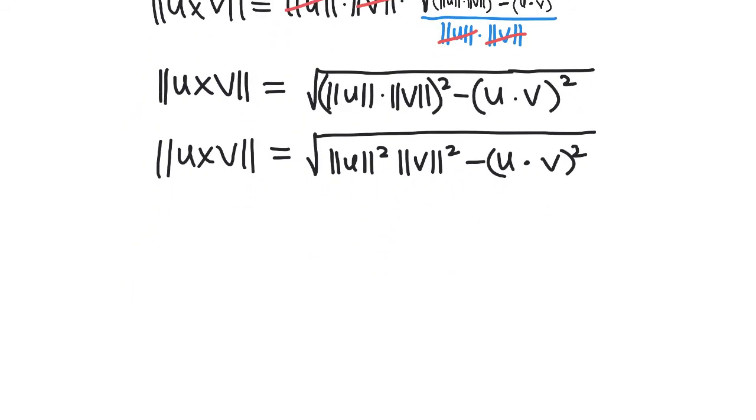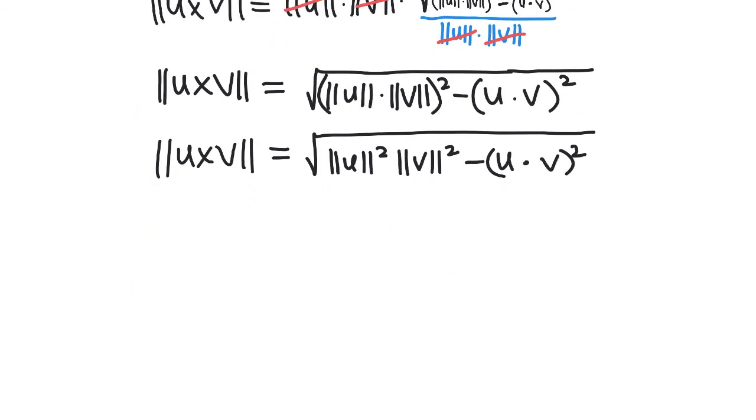If we clean this up or change the orientation, we get ||u x v||² equals ||u||² ||v||² minus (u dot v)².